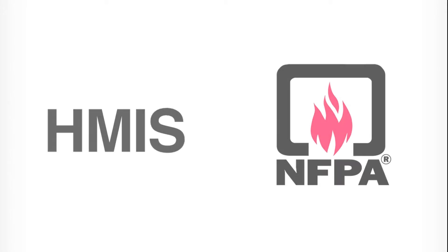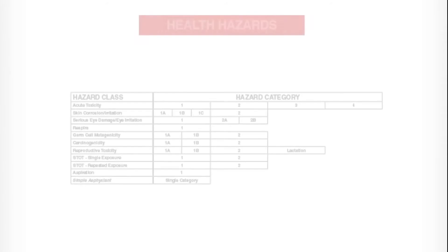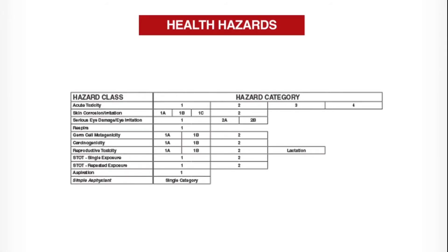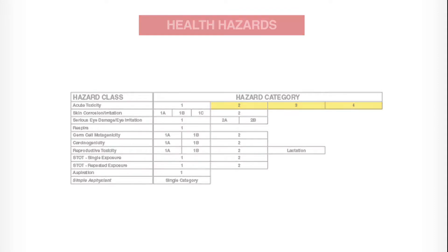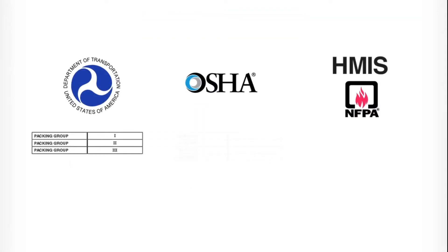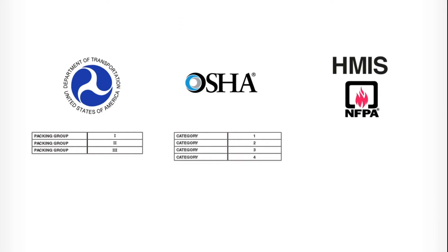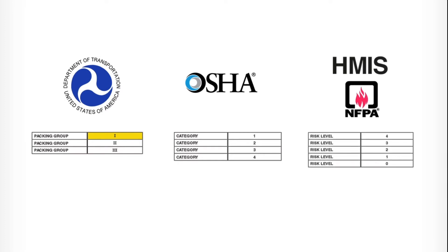Unfortunately, HMIS and NFPA appear to work opposite of GHS. Under GHS, the most hazardous chemicals within a class are assigned to Category 1, with Categories 2, 3, and 4 being lower-level hazards. If you are familiar with DOT's packing groups, this makes sense — packing group 1 material is the highest hazard. HMIS and NFPA assign the highest risk to level 4. At this time, there are no plans for HMIS or NFPA to update their systems to match GHS.